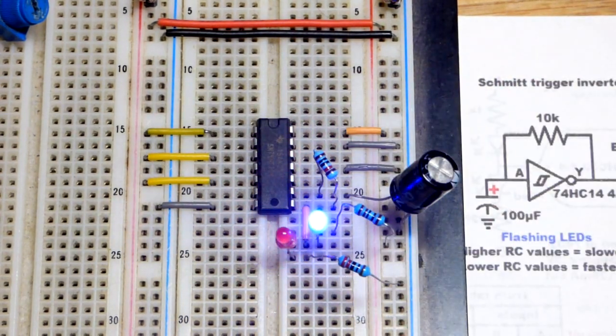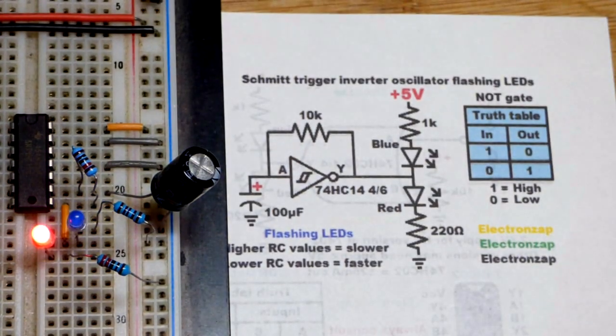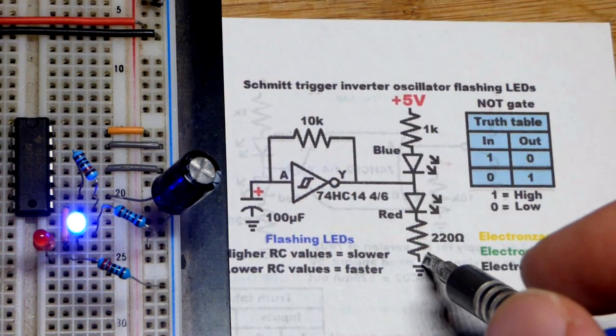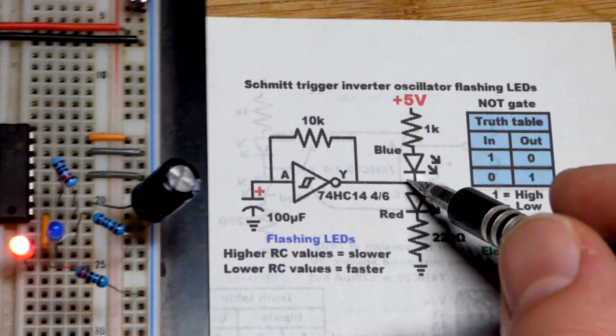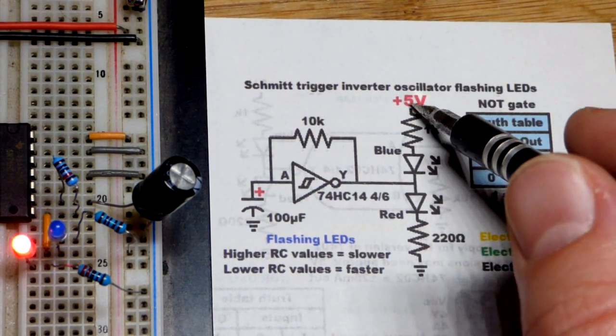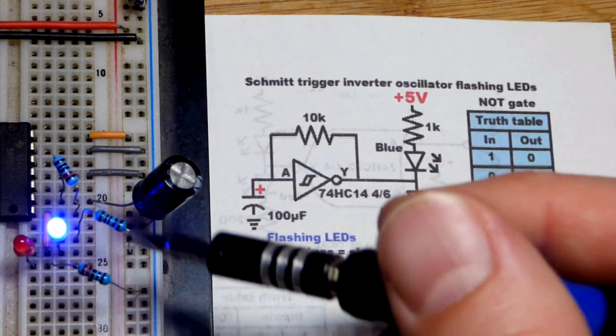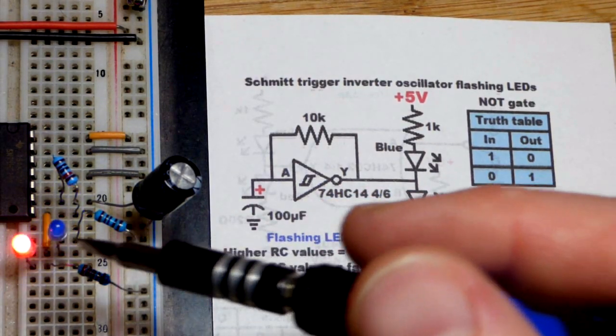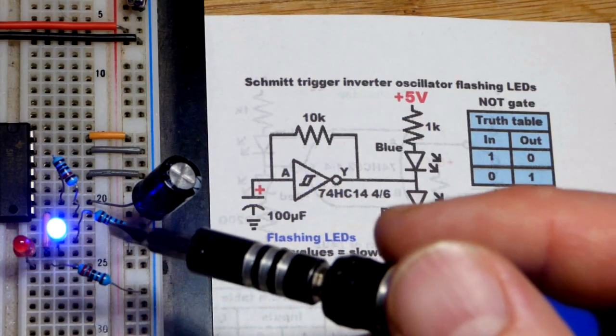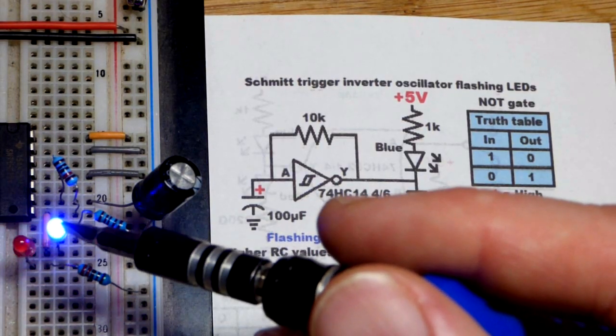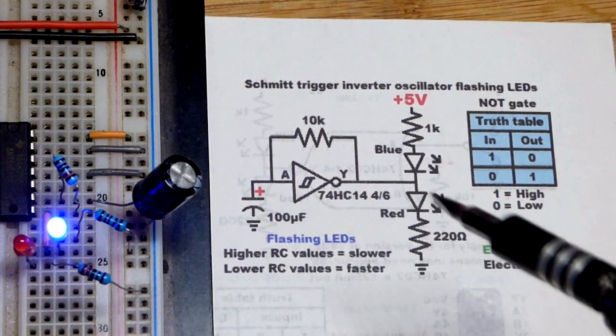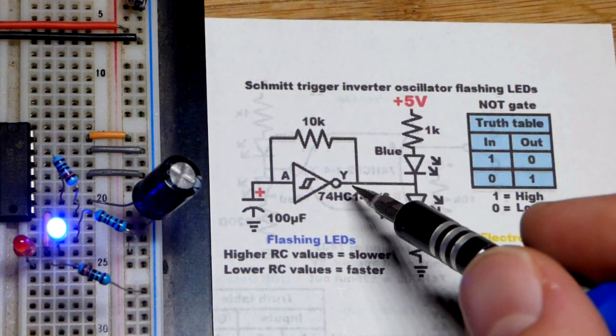Now, we have the LEDs flashing. I do this a lot in my circuits. So a blue LED, you can see, comes from the positive supply. That 1K resistor to the positive supply. Blue LEDs are brighter than red LEDs. So we got less current going through the blue LED so that it won't overpower the red LED. More current through the red LED so that it will try to be as bright as the blue one.